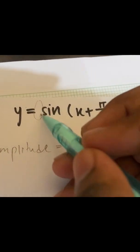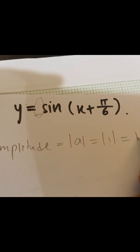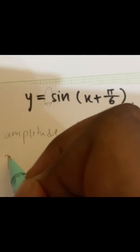Amplitude is something that will be here, so this one is one, which equals to one. Then we have to find the period.